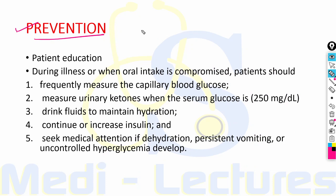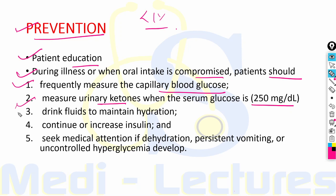With appropriate therapy, mortality of DKA is very low — less than 1% — but prevention is very important. Patient education should include knowledge of DKA symptoms, its precipitating factors, and management of diabetes during concurrent illness or when oral intake is compromised. Patients should frequently measure capillary blood glucose and urinary ketones; when serum glucose becomes 250 or more, drink fluids to maintain hydration, continue or increase insulin, and seek medical attention if dehydration, persistent vomiting, or uncontrolled hyperglycemia develop.